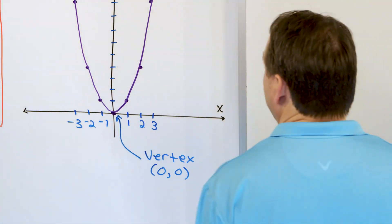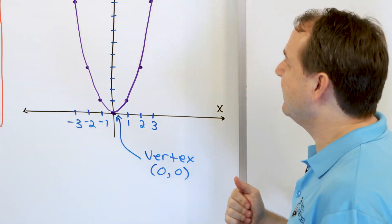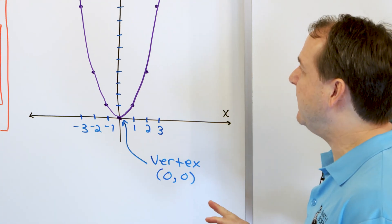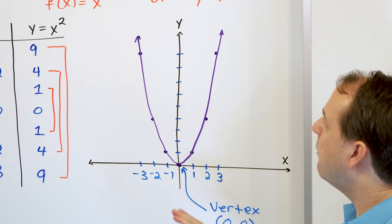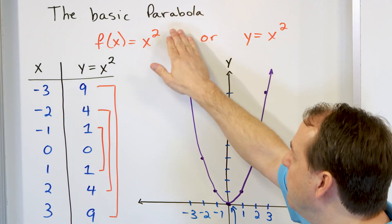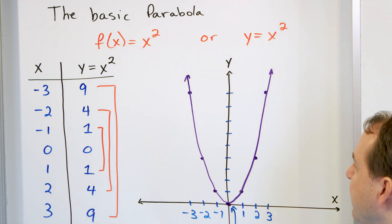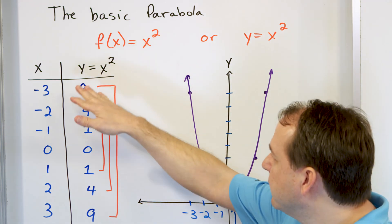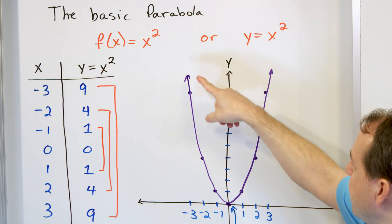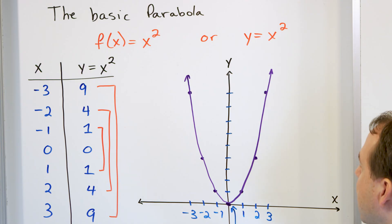On this board, this is what we did in the last lesson. We talked about the concept of the basic parabola: f of x is equal to x squared. We did a quick table of values, plotted that, and drew the general shape of the parabola.